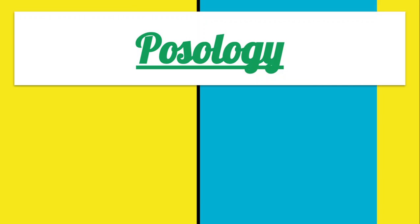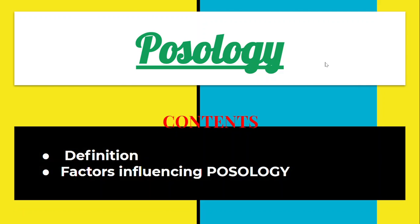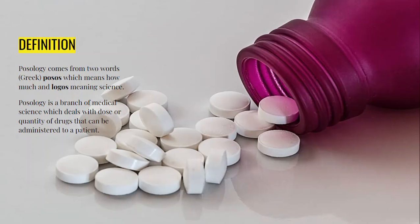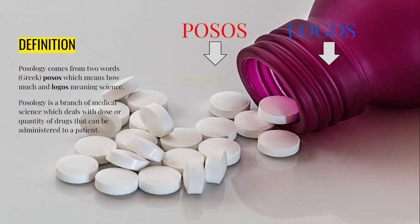The contents we are going to be covering are the definition and factors influencing posology. Posology comes from two words: POSOS, meaning how much, and LOGOS, meaning science. Together, posology is the branch of medical science which deals with the dose or quantity of drugs that can be administered to a patient for the desired pharmacological effect.